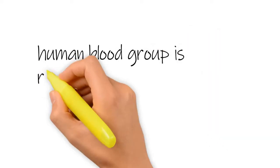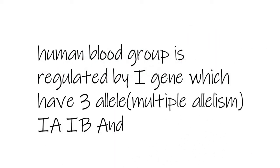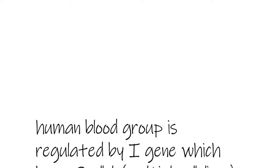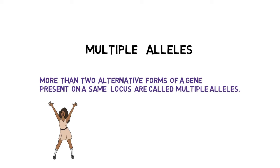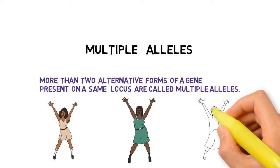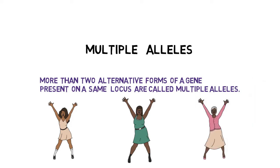What is a gene? A gene is the segment of DNA which expresses a character. You also know that a gene has alternate forms called alleles, and one gene normally contains two alternate forms — two alleles. But in certain cases, a gene has more than two alleles. That is called multiple allelism.